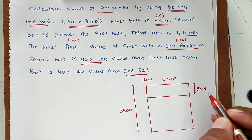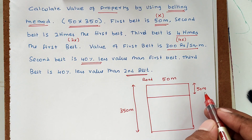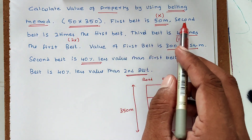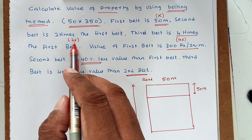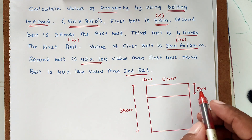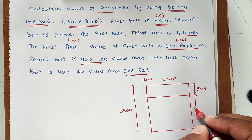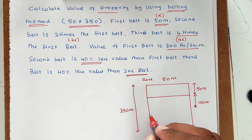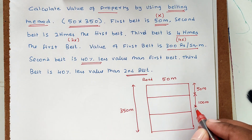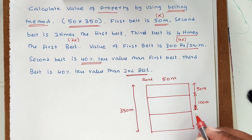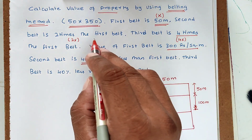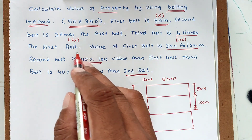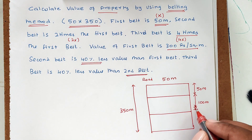The road-facing first belt is 50 meters, as given in the problem. The second belt is two times the first belt, so 50 into 2 equals 100 meters. The third belt is four times the first belt, so 4 into 50 equals 200 meters.